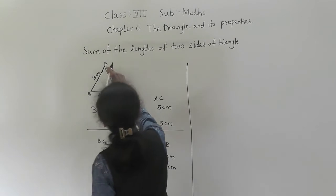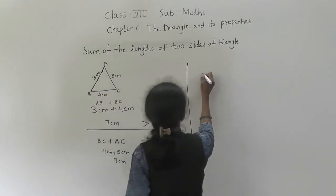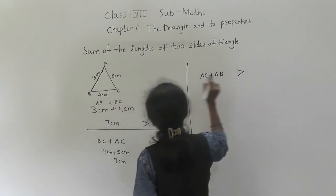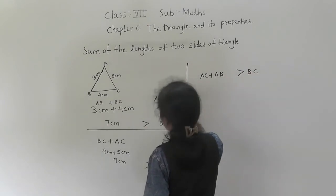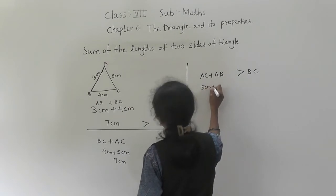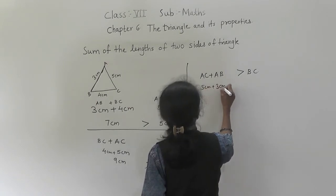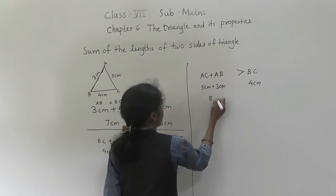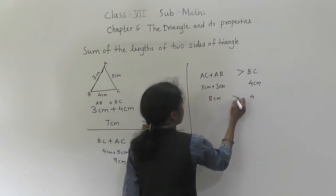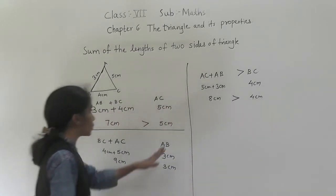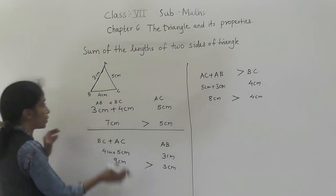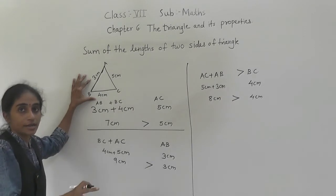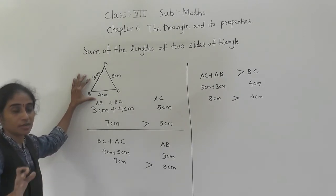Third combination: AC plus AB is greater than BC. AC is 5 cm and AB is 3 cm, and BC is 4 cm. So 5 plus 3 is 8 cm, and 8 cm is greater than 4 cm. This proves that the sum of the lengths of two sides of a triangle is greater than the third side — then only it is a possible triangle.